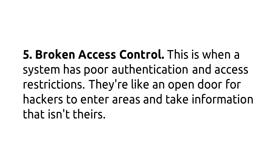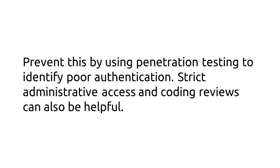Number 5: Broken Access Control. This is when a system has poor authentication and access restrictions. They're like an open door for hackers to enter areas and take information that isn't theirs. Prevent this by using penetration testing to identify poor authentication. Strict administrative access and coding reviews can also be helpful.